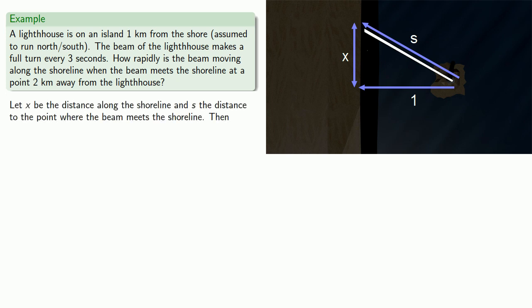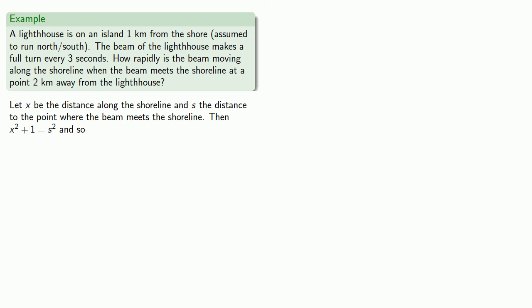So let's go ahead and write down our relationship between x and s. Where we use the fact that s, x, and 1 are the lengths of the hypotenuse and two sides of a right triangle. Since we want to know how fast the beam is moving along the shoreline, it seems that we want to find dx/dt, so we differentiate with respect to t.